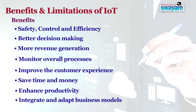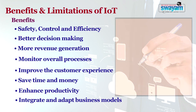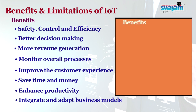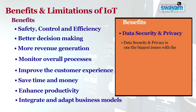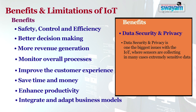There are also certain limitations of IoT, though very few. Number one is data security and privacy — this is one of the biggest issues with IoT, where sensors are collecting, in many cases, extremely sensitive data. Keeping that sensitive data secure is vital to consumer trust.